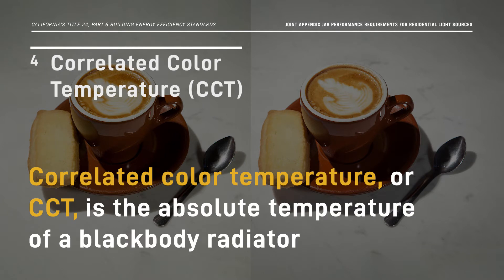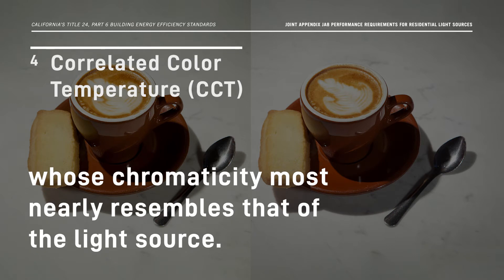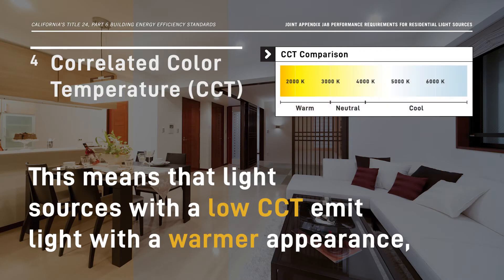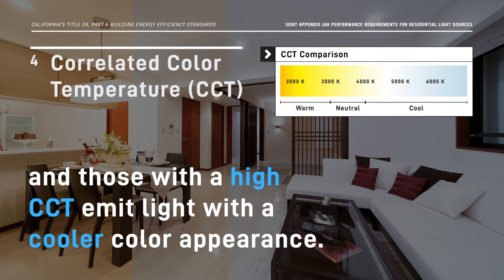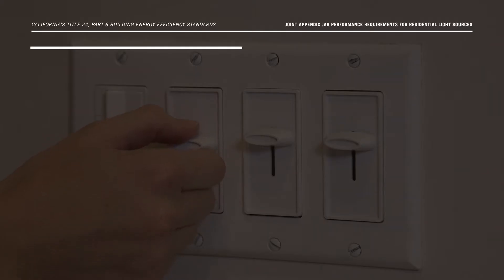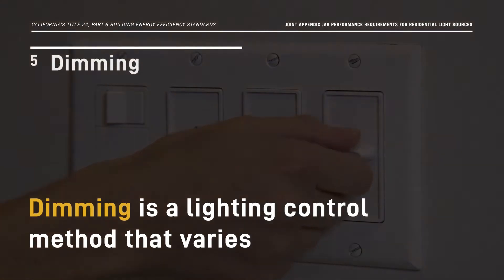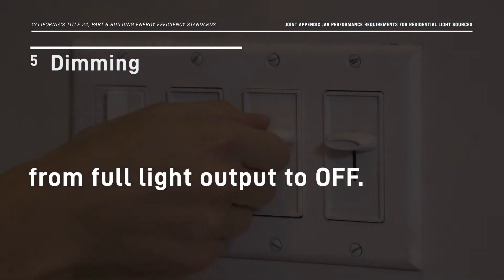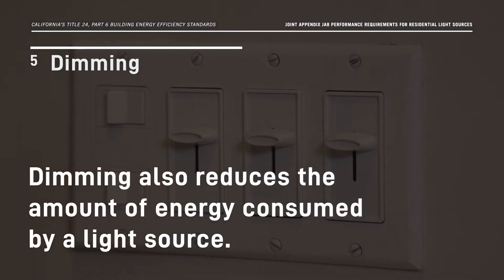Correlated color temperature, or CCT, is the absolute temperature of a blackbody radiator whose chromaticity most nearly resembles that of the light source. Light sources with a low CCT emit light with a warmer appearance, and those with a high CCT emit light with a cooler color appearance. Dimming is a lighting control method that varies the light output of a source from full light output to off, and also reduces the amount of energy consumed by a light source.